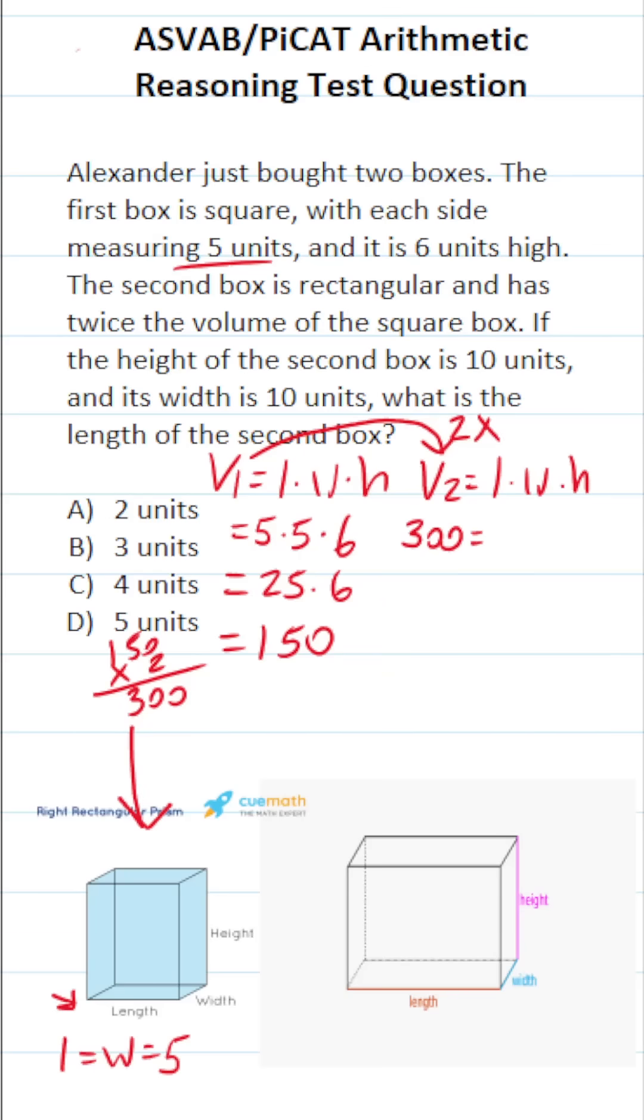Let's fill this in with what we know. We're going to be solving for the length of the second box. That said, we know its width is 10 units, and its height is also 10 units.